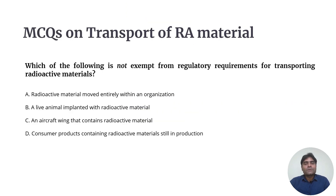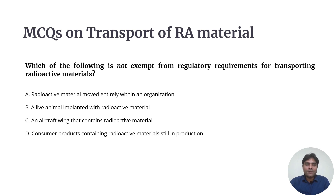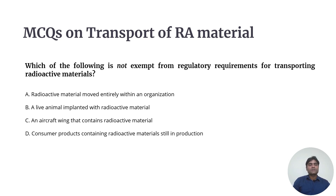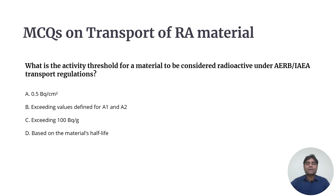Now coming to a few review questions. Question 1: Which of the following is NOT exempt from regulatory requirements for transporting radioactive material? Option A — radioactive material moved entirely within the organization — does not require regulatory comments. A live animal implanted with radioactive material is also exempt. An aircraft wing containing radioactive material is also exempted. Option B — a consumer product containing radioactive material still in production without regulatory approval — is NOT exempted. That is the correct answer.